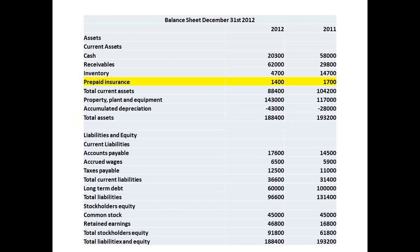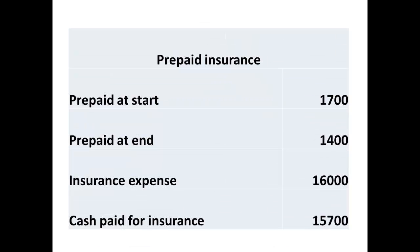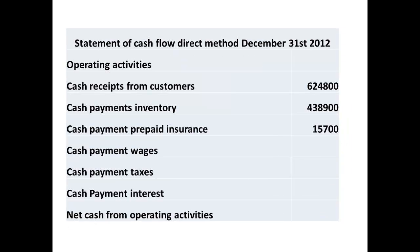To determine the cash payment on prepaid insurance, we need figures for prepayments from the balance sheets for two years. We add the insurance expense to the prepayment figure at the start of the year, then subtract the prepayment figure for the end of the year, giving a figure of $15,700 paid for insurance.